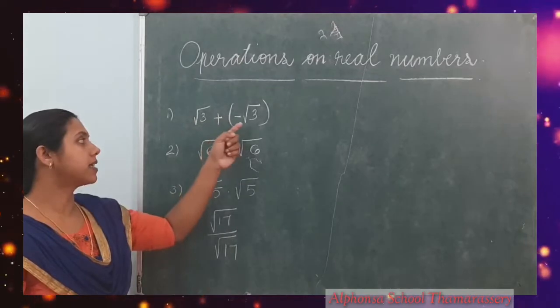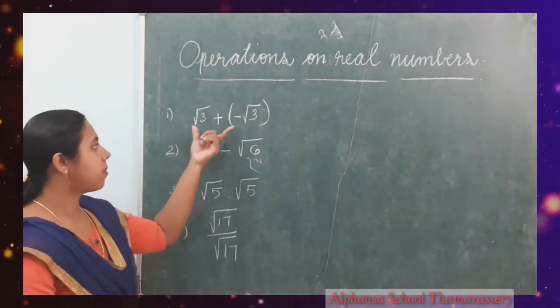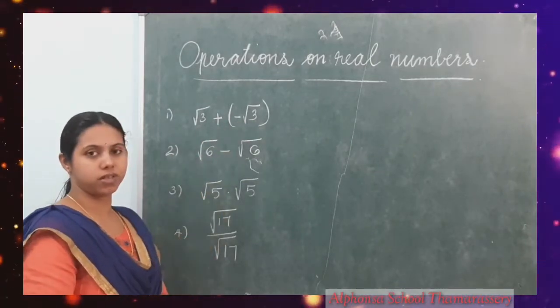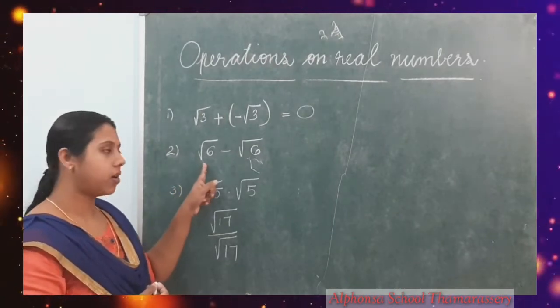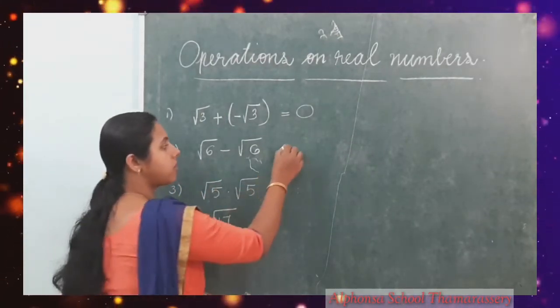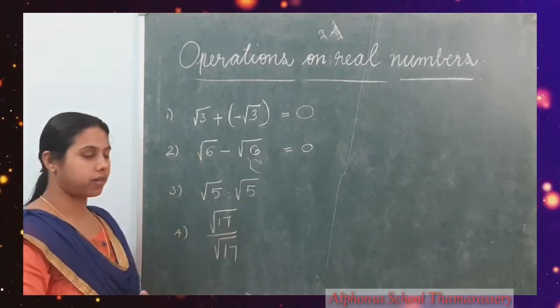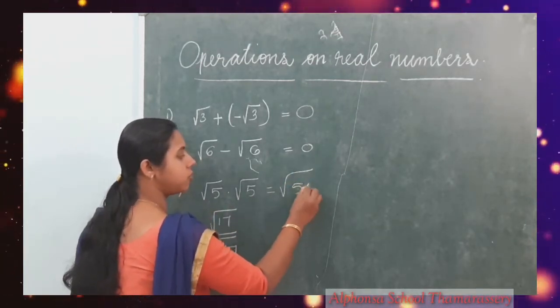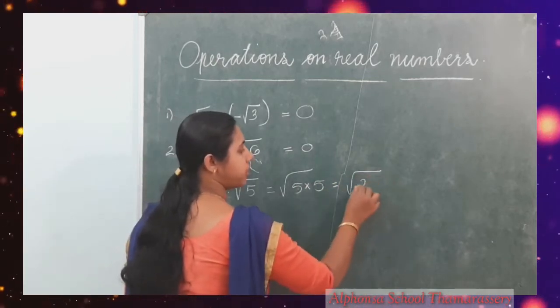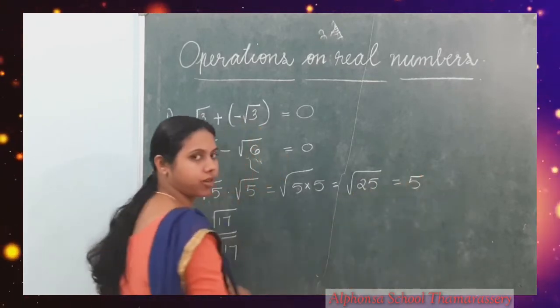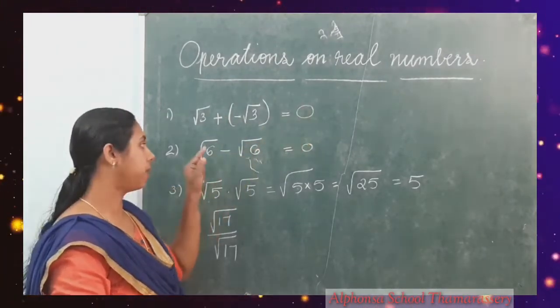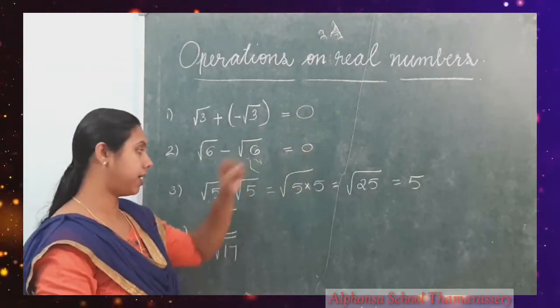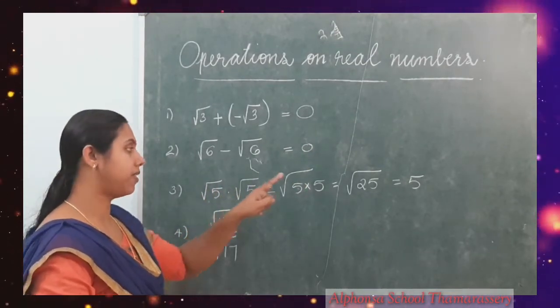Let us see some examples. Here, root 3 plus minus root 3 — root 3 is an irrational number. The sum of these two terms, root 3 plus minus root 3, is equal to 0. Root 6 minus root 6 is also equal to 0. Root 5 into root 5 can be written as root of 5 into 5, which is equal to root of 25, that is equal to 5. It's also a rational number. So we added two irrationals and got 0, a rational number. We multiplied two irrational numbers and got a rational as an answer.